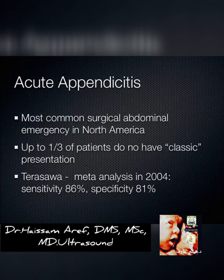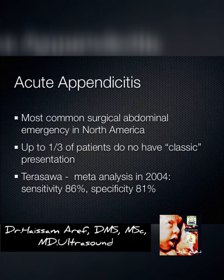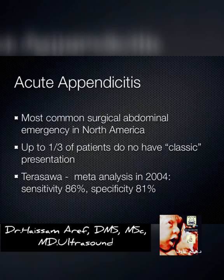The problem with appendicitis is that people don't always come in like they've read the textbook — pain around the belly button, nausea, chills, fever, then pain migrating to the right lower quadrant at McBurney's Point. That classic presentation only happens about a third of the time. About 50% of the time there's something funky about the history that lures you away from appendicitis — like a patient who's eating Cheetos, which makes you think they can't have appendicitis. But I've seen it many times.